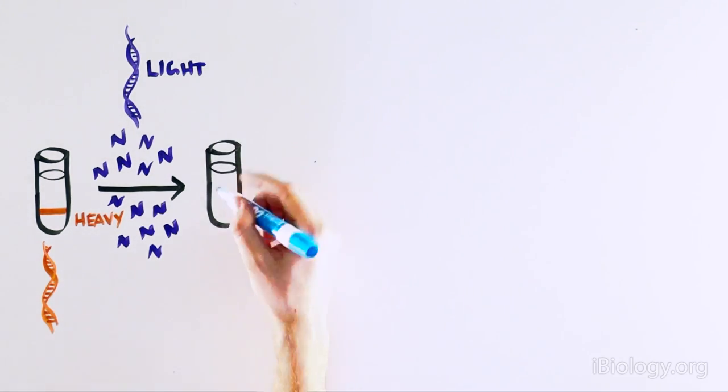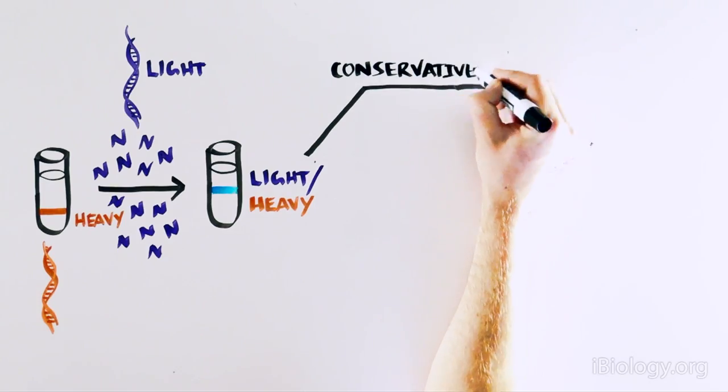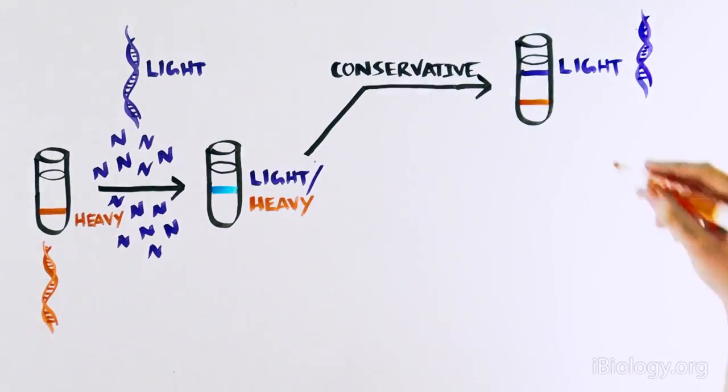After one cell division, the DNA was half as heavy. So half of the DNA molecule contained heavy nitrogen, and the other half didn't. This is not in line with the conservative DNA replication model, which would predict that one molecule would be all light and the other all heavy.